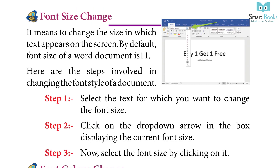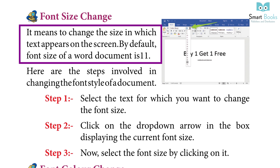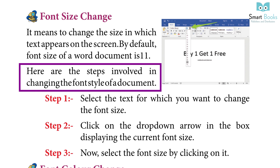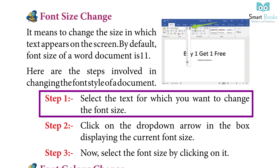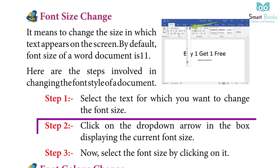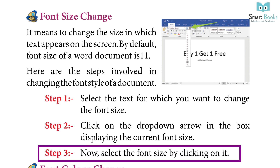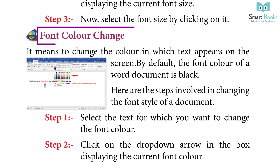Font Size Change means changing the size at which text appears on the screen. By default, the font size of a Word document is 11. Steps: Step 1 — select the text for which you want to change the font size. Step 2 — click on the drop-down arrow in the box displaying the current font size. Step 3 — select the font size by clicking on it.